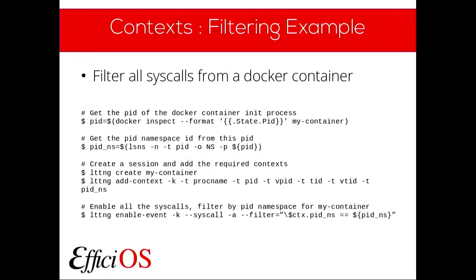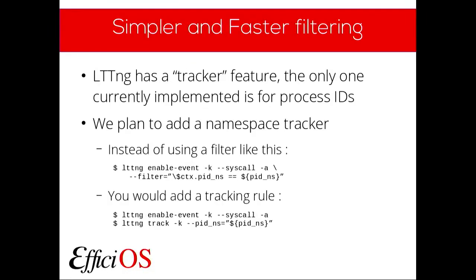We did the same thing for the user space tracer context, so you can see the same kind of values and filters. Here is an example of the commands you would run to enable a tracing session for all syscall events coming from a specific Docker container on your host. We also have the tracker feature, which is a simpler and faster filtering system — we already have an implementation for PIDs to trace specific PIDs without filtering rules — and we're planning to add namespace support to this tracker feature.